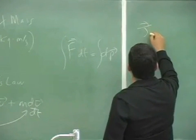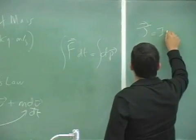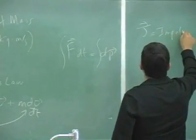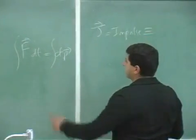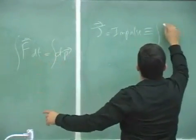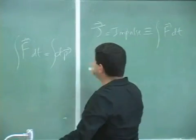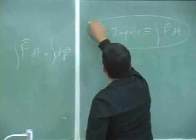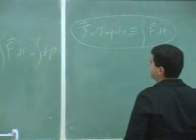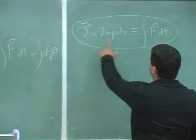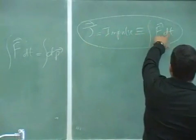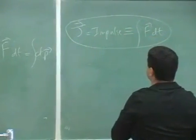J is impulse, which is defined as the integral of F dt. So again, that's its definition, and impulse, therefore, is a vector. It's the integral of, this is a vector times time. So it's a vector.